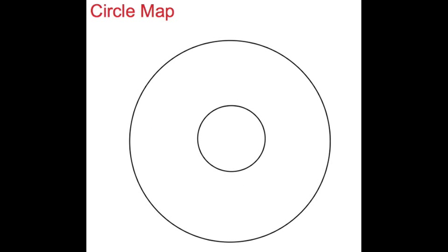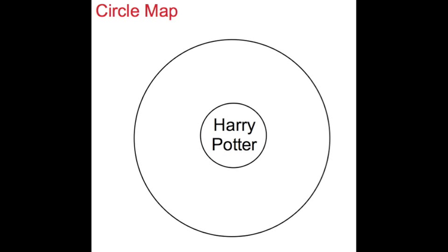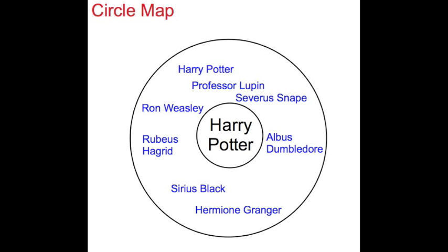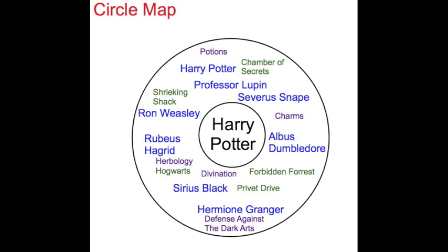The circle map is constructed with a small inside circle and a larger outside circle. In the inner circle, use words, numbers, pictures, or any other sign or symbol to represent the object, person, or idea you are trying to understand and define. In the larger outside circle, write or draw context information that gives definition to the idea or concept that is in the center.